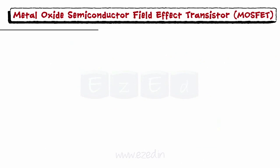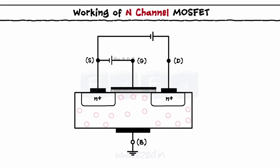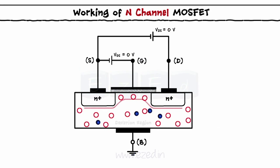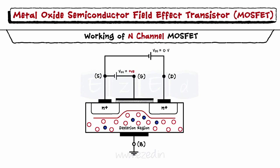Moving forward, let's start with the working of MOSFET. Let's consider that VGS and VDS are equal to zero volts. The MOSFET remains stable but a depletion region is formed due to the P-N junction as shown. Now, let's apply a positive VGS. As the positive voltage is applied to the gate terminal, holes near the gate are repelled towards the substrate. Hence, the MOSFET operates in the cut-off mode.